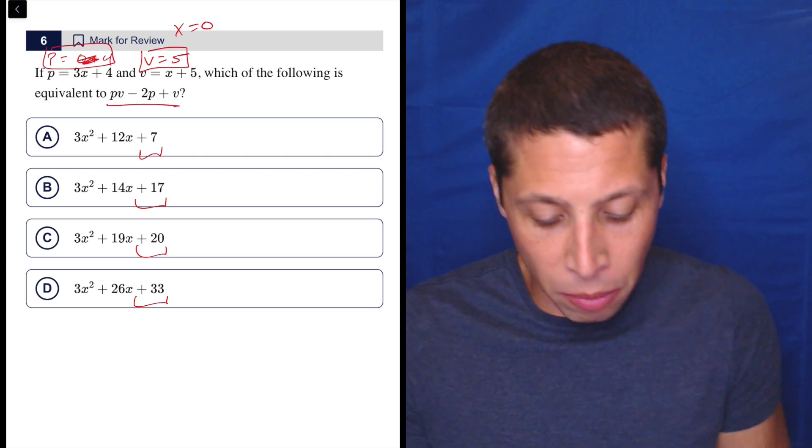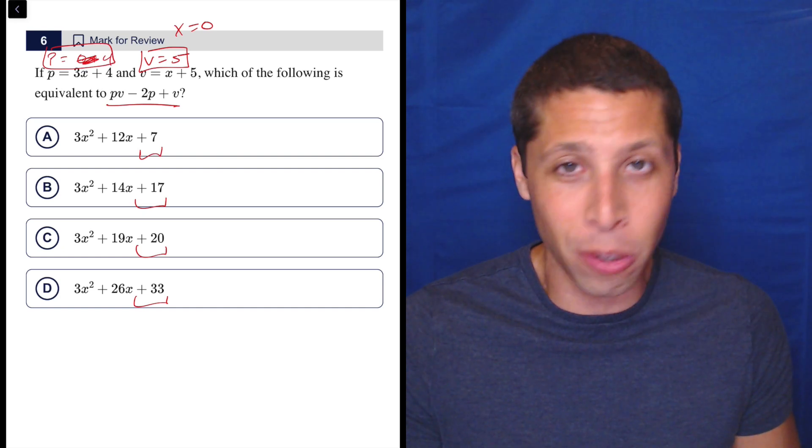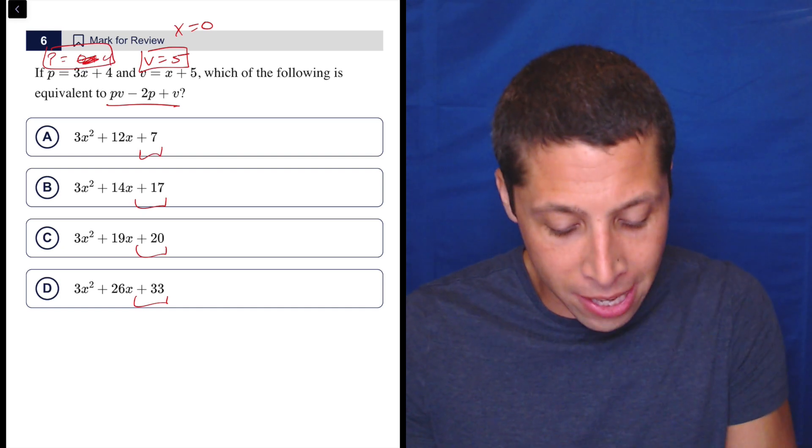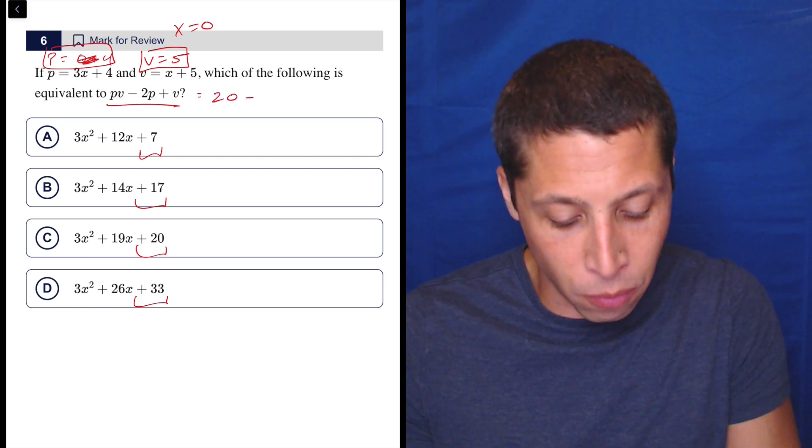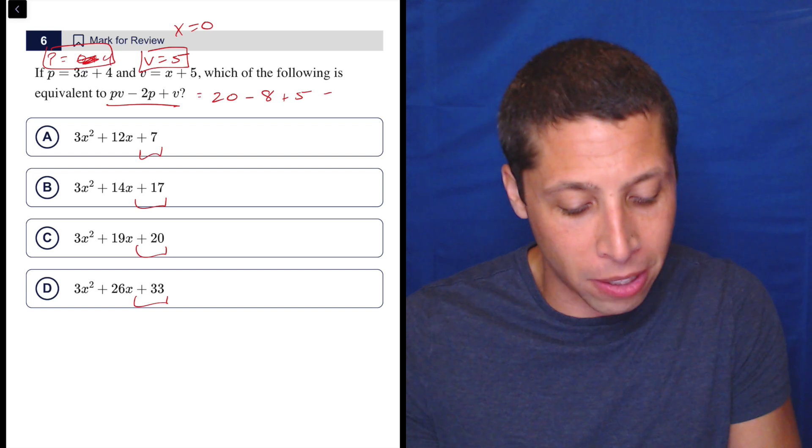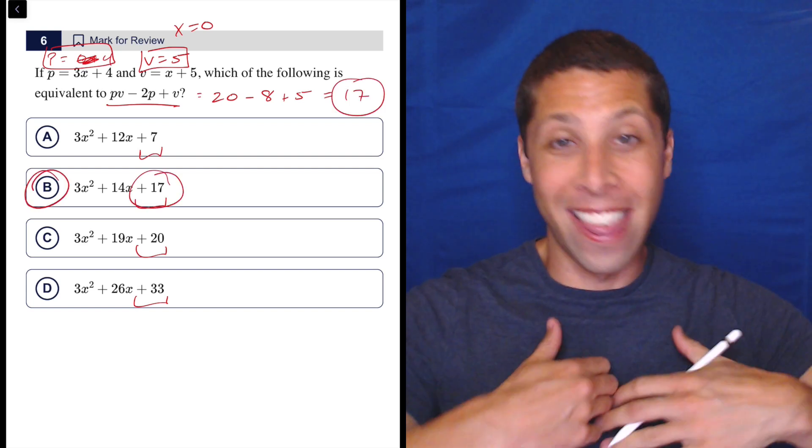Now, what did they want? Let's be really careful. We wanted P times V minus 2P plus V. So if you can't do this in your head, that's okay. Split it apart, right? So P is four, and V is five. So four times five is 20, minus two times four is eight, plus five. So that's 12 plus five is 17. Is that an answer? Yes, that's it.